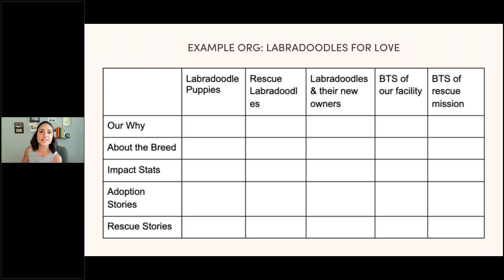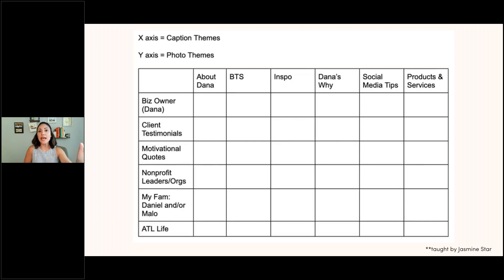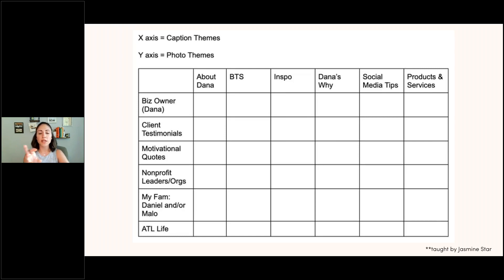An example in the nonprofit space: I made up an organization about Labradoodles. Across the top are your caption themes — what you're writing about. On the left-hand side are visuals. If the photo is a Labradoodle puppy, the caption would talk about your 'why.' A photo or video of behind the scenes of your facility could pair with impact stats. You take your finger and marry the two across the board. The 20 minutes or so you spend is on creating five to six different grid options of your captions and media.